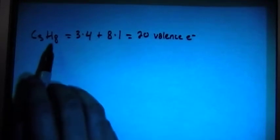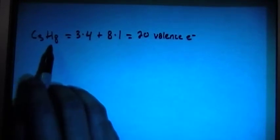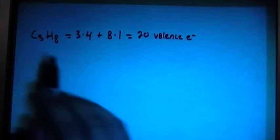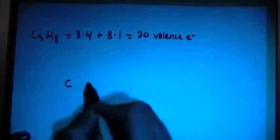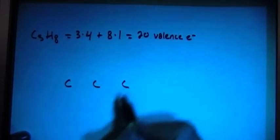We know that the hydrogens cannot be center atoms because they can only bond once, so all the carbons must be in the center. So we can go ahead and just draw the 3 carbons. C, C, C.